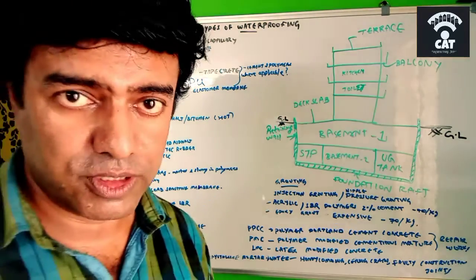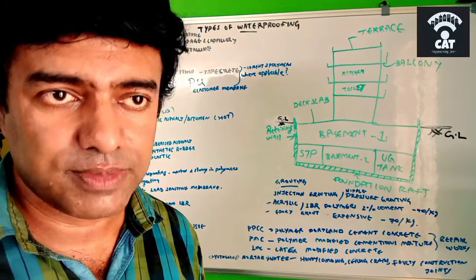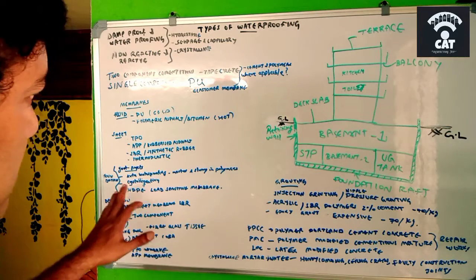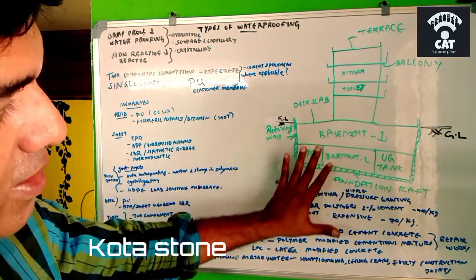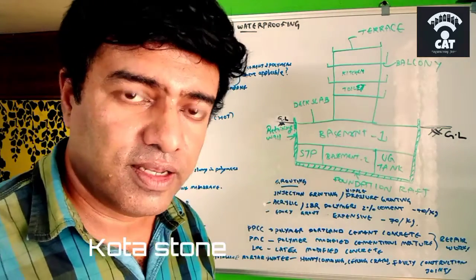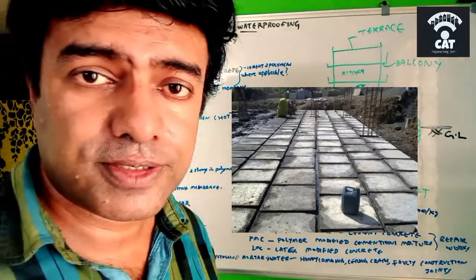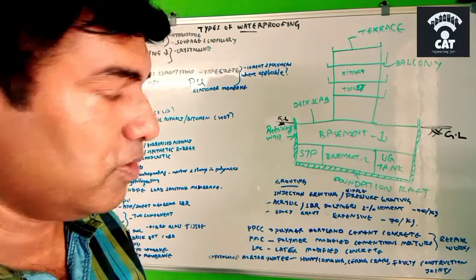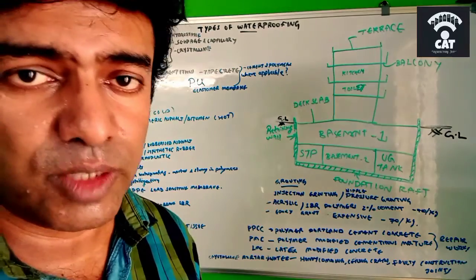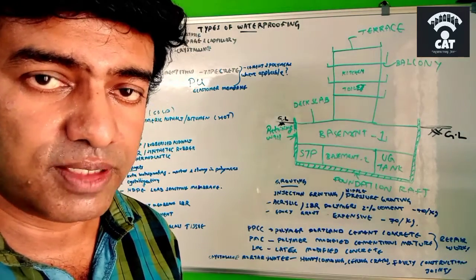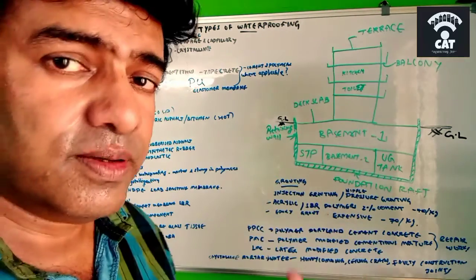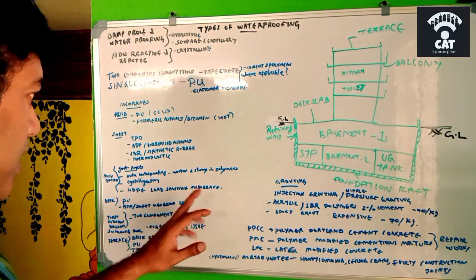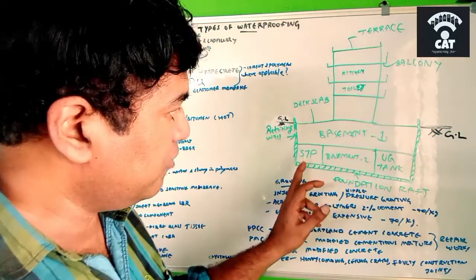For government projects, when preparing a BOQ, common waterproofing materials include kota stone. Kota stone is laid with cement mortar mixed with polymers to provide waterproofing in basements. The polymer mixture in the cement mortar gives it waterproofing properties. Kota stone itself prevents water entry, and at joints, cement slurry with polymers is used.